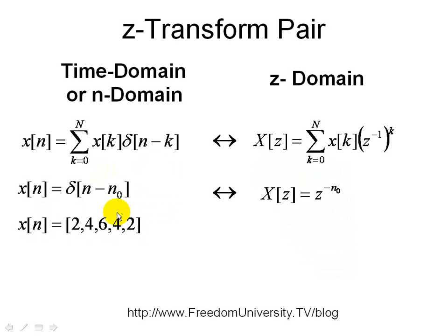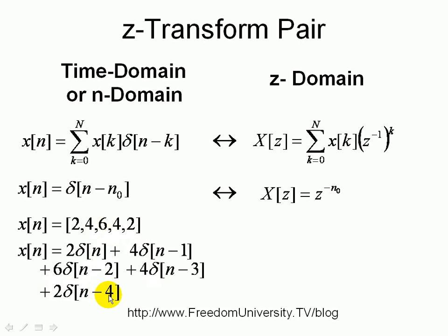We can rewrite this as weighted, time-shifted impulses. The first 2 is 2δ[n] at k=0. Next is 4δ[n-1], then 6δ[n-2], then 4δ[n-3], and finally 2δ[n-4]. These represent the formula shown: a summation of weighted, time-delayed impulses.